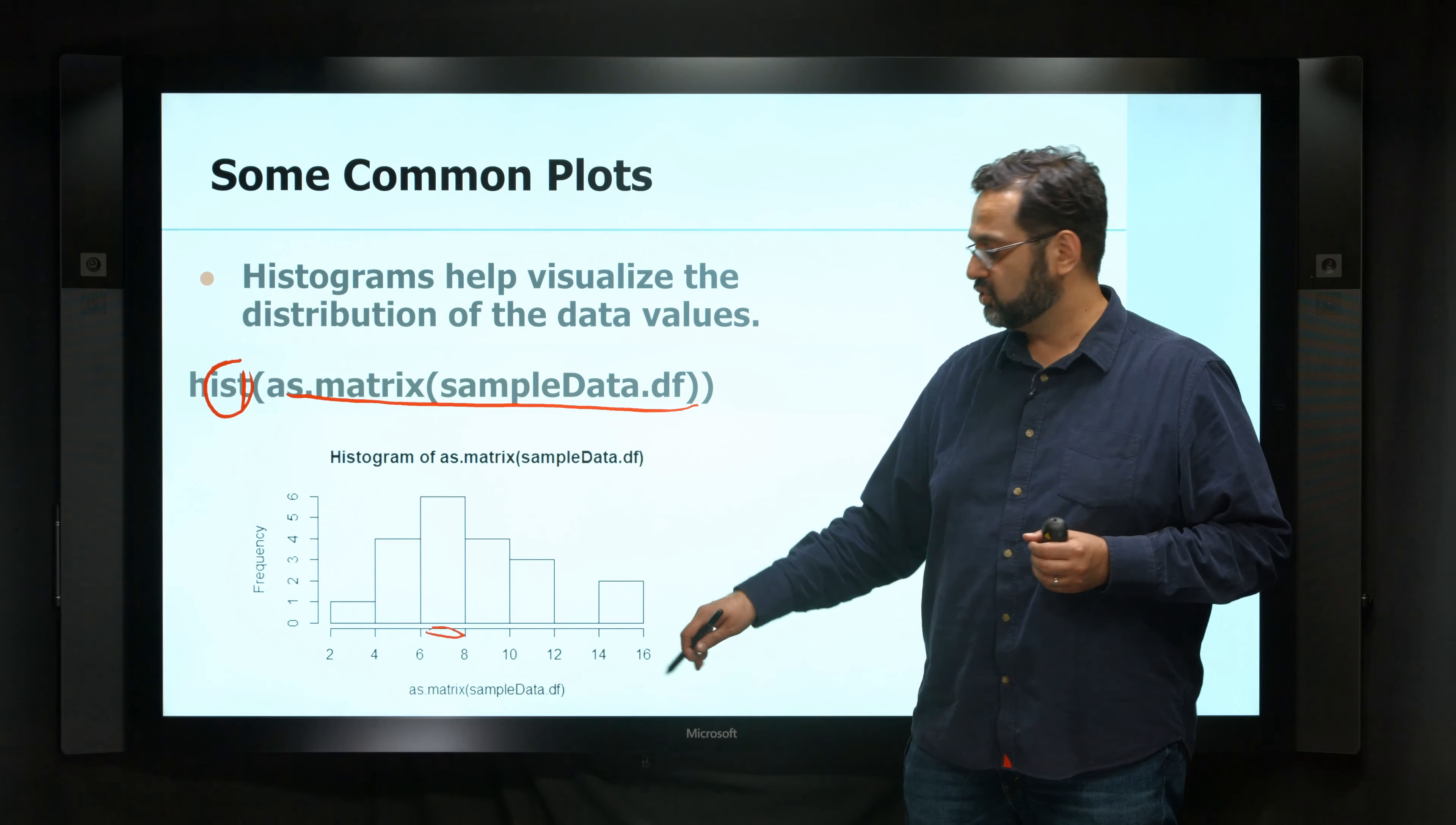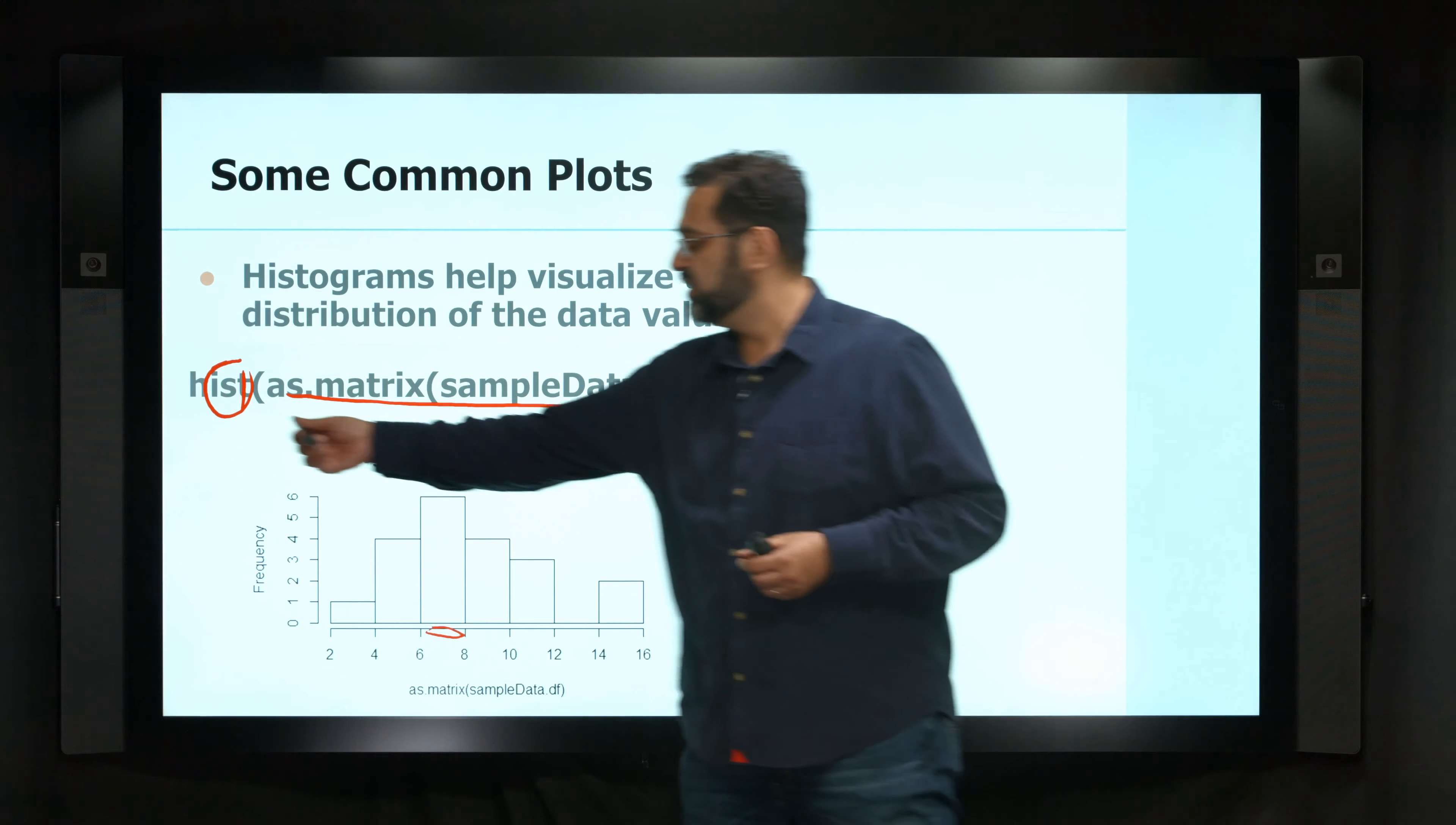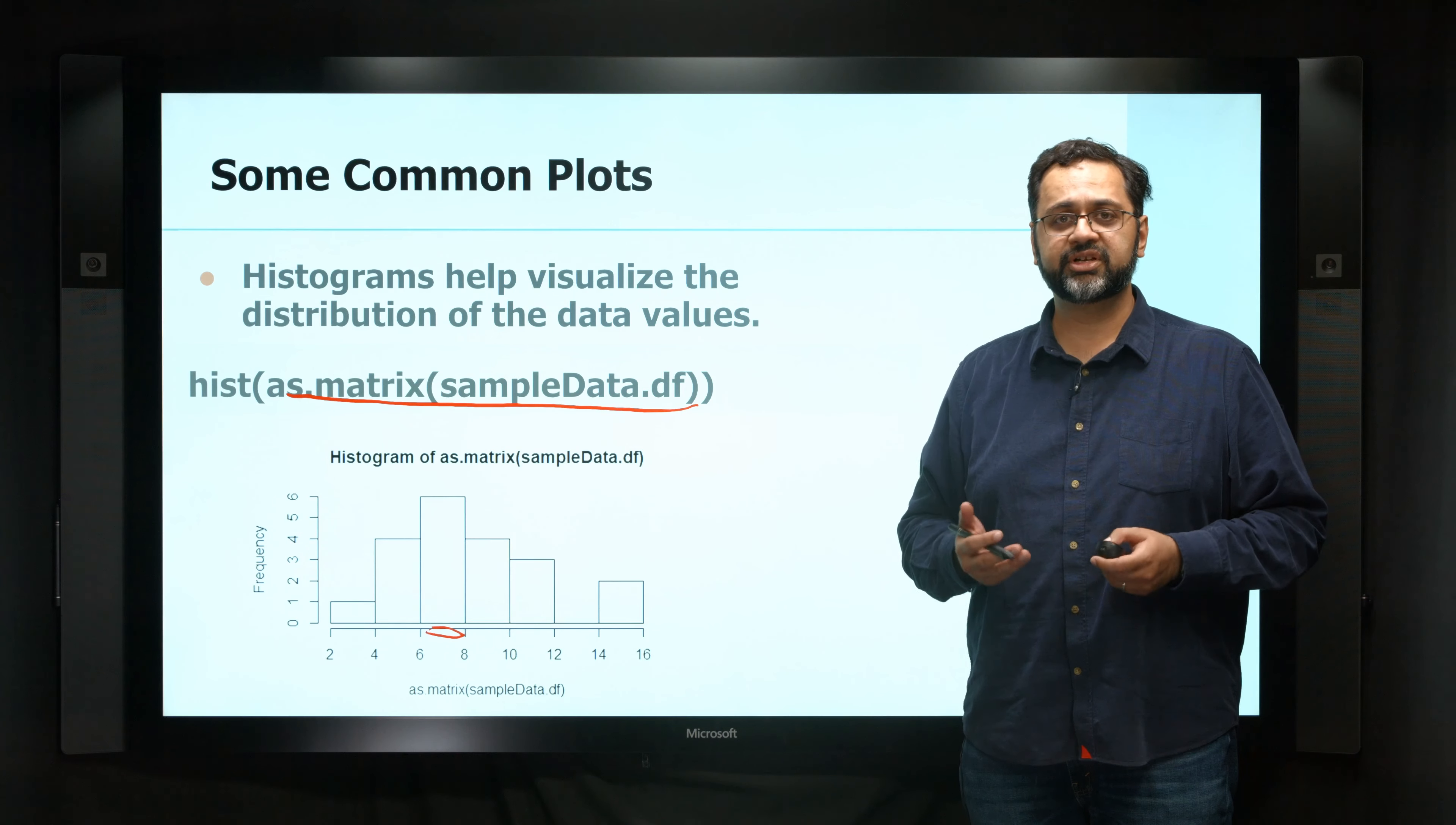And it automatically picks the x range that it needs to do to fit all the values. Again, I have a way of controlling to show only specific ones, scaling them, and so on. So again, just a simple hist command here, and the input of the data values gives you a very nice and useful histogram.